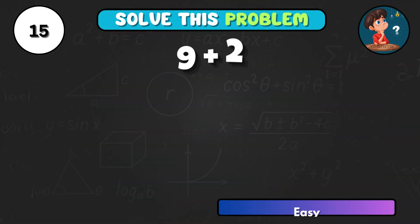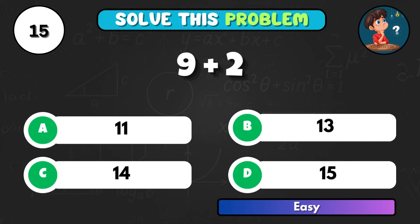9 plus 2, what's your final number? Correct choice A, giving 11.